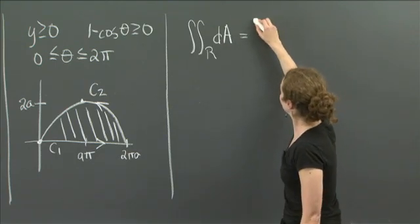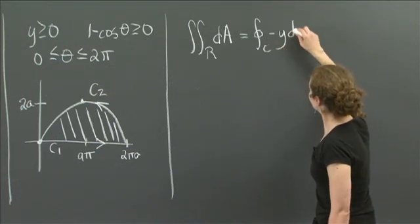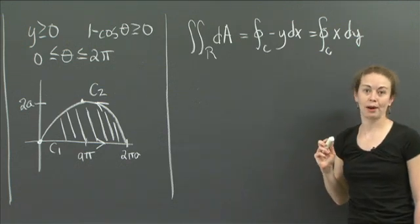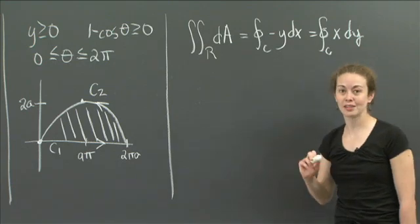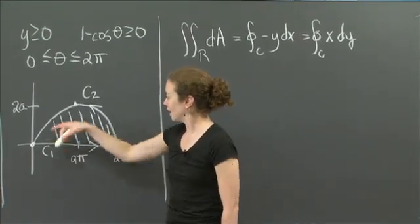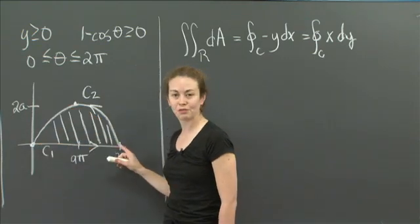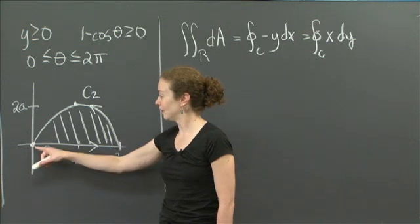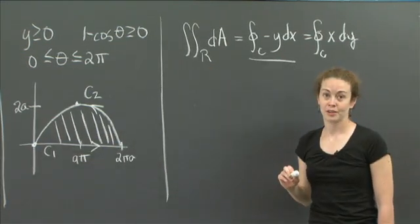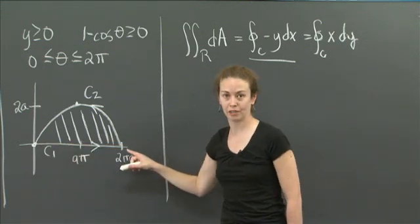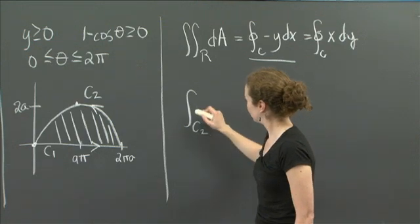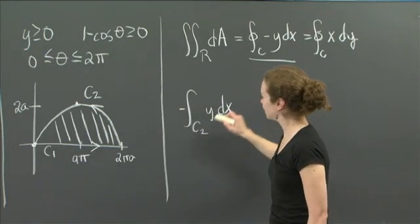You saw in class that you have two options: ∫-y dx over the closed curve, or ∫x dy over the closed curve. Which is better? Notice that on these two curves, x is changing on both, but y is fixed on one. It would be nicer if we could just integrate on one part. Since y is constant and equals 0 along the bottom, we choose -y dx. So you only need to integrate ∫_{C2} -y dx. That gives you the entire area.